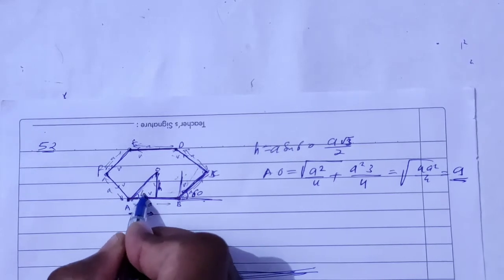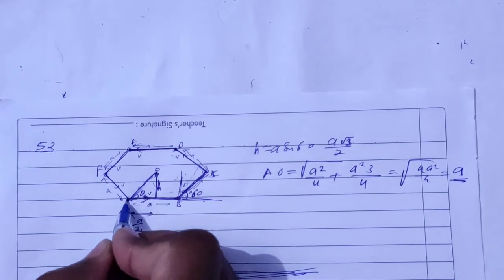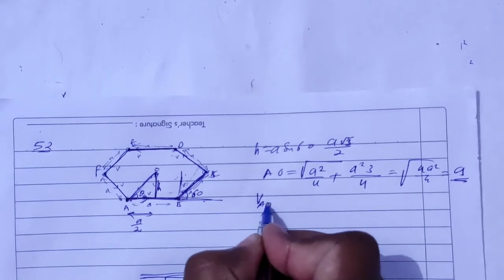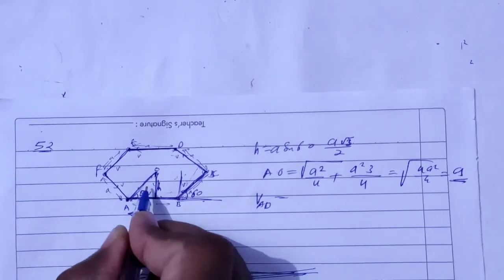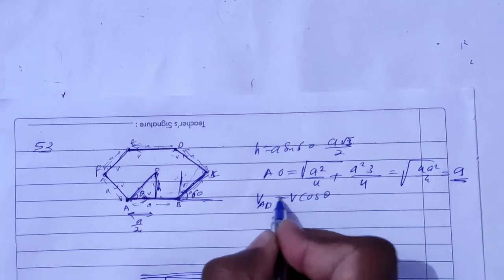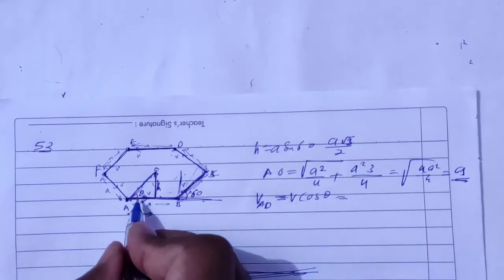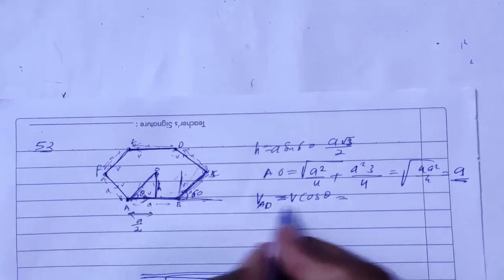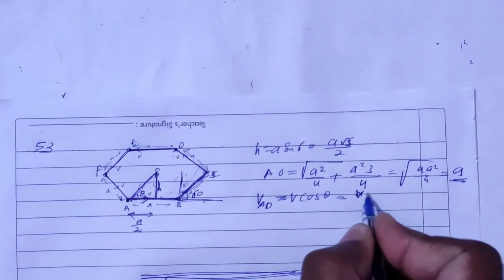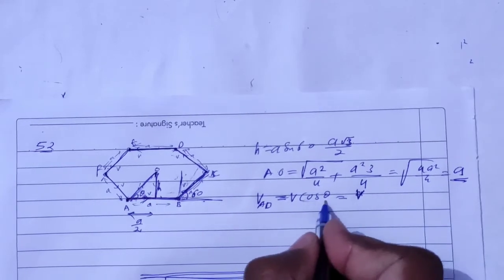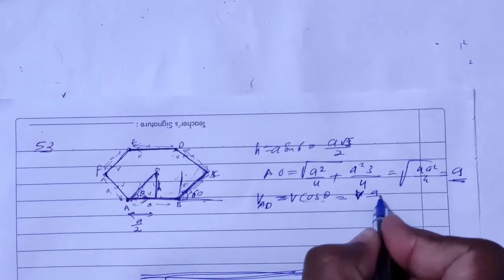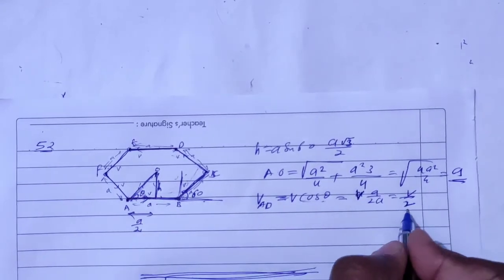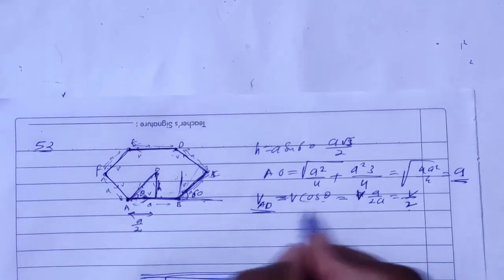V is the speed and this angle is theta. So the velocity component along the direction AO will be V·cosθ. cos theta equals base upon hypotenuse, which is (a/2) upon a. So V·cosθ = V·cos60° = V/2.